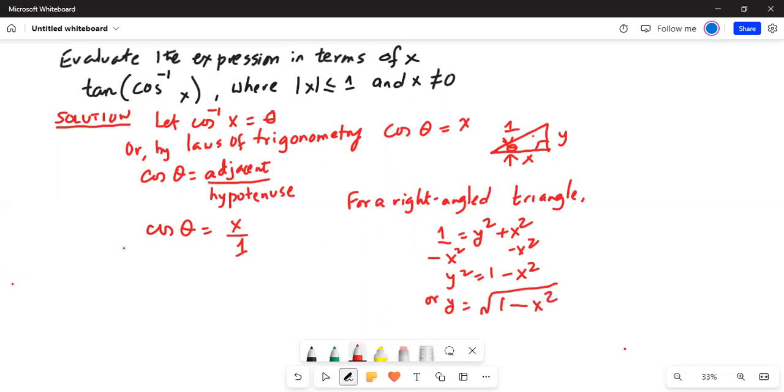Tangent of theta is equal to opposite side by adjacent side. And that will be equal to opposite side is square root of 1 minus x square divided by adjacent side is x.